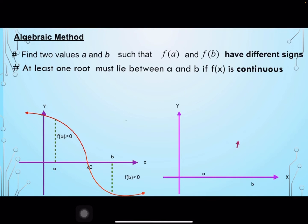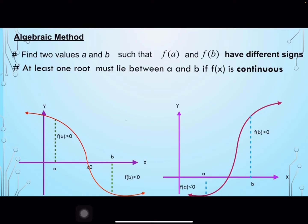We have a and b on the x-axis. f(a) is negative because it is below the x-axis, and f(b) is positive because it is above the x-axis. There should be a point where this curve cuts the x-axis to become a root of the equation. So we have x-nought as the root for this curve.